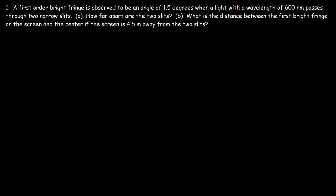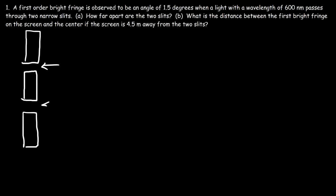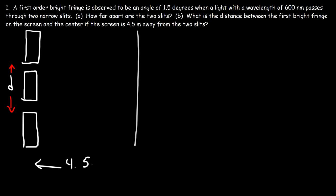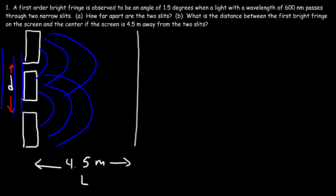Let's get a good understanding of this experiment. We have two narrow slits separated by a distance d, which is what we're looking for in this problem. This is the screen, and in part B the screen is 4.5 meters away, so that's L. Plane waves passing through the two slits will diffract around them, and these two waves are going to interfere with each other and create a pattern on the screen.